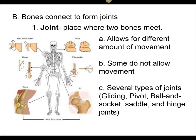What is a joint? A joint is where two bones meet. Some joints allow for lots of movement, some allow for little movement, and some allow for no movement. We'll look at the different types of joints.